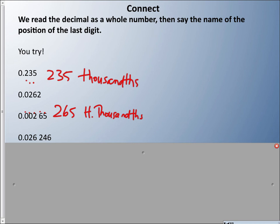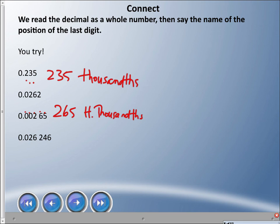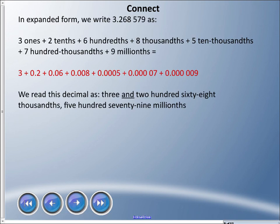We're reading as a whole number, so that gives us 26,246 millionths. We add the name of the last digit — 26,246 millionths. We've talked about expanded form before, but let's apply it here: 3.268579 breaks apart as three ones plus two tenths plus six hundredths plus eight thousandths plus five ten-thousandths plus seven hundred-thousandths plus nine millionths. The point of expanded form is to show what each digit actually represents.